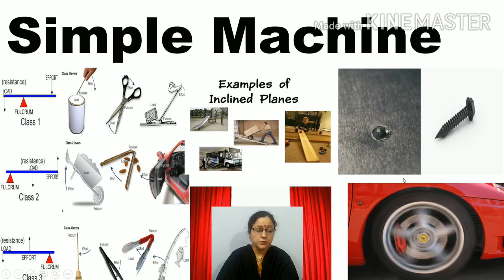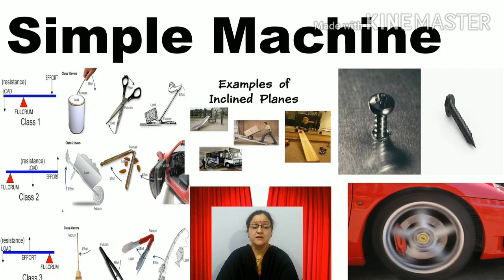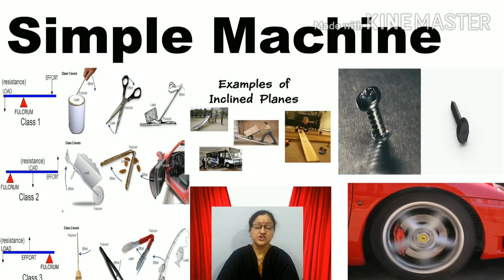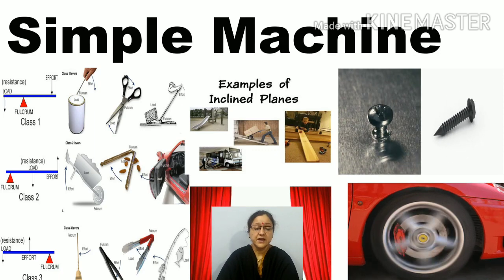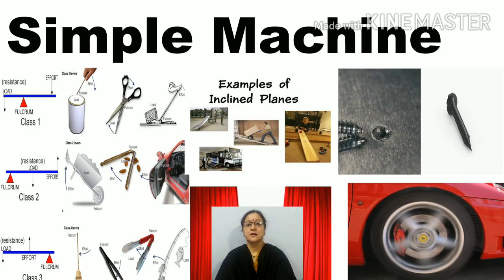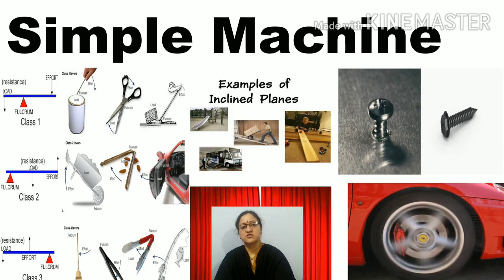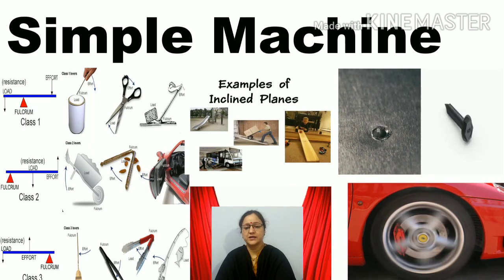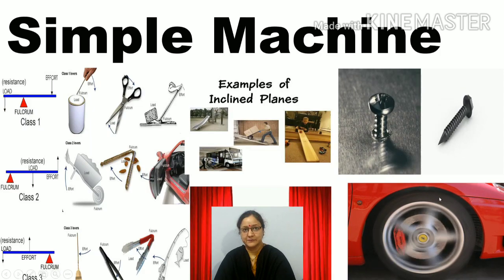Screw is actually an inclined plane wrapped around a cylindrical rod that has a sharp pointed end. Screws are turned with the help of a screwdriver. Now, wedge is actually a combination of two inclined planes. When two inclined planes join together, they form a wedge. An example is an axe.